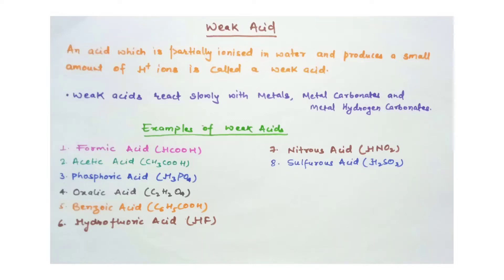A weak acid is an acid which partially ionizes in water and produces a small amount of H+ ions. Weak acids produce very small amounts of H+ ions and react slowly.